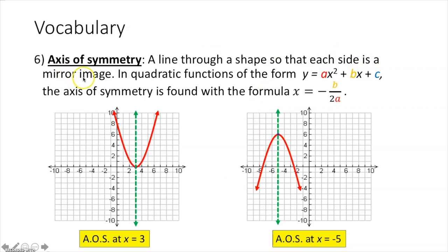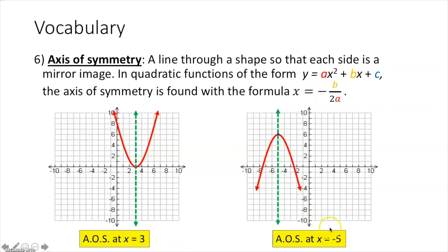The axis of symmetry is a line through a shape so that each side is a mirror image. In quadratic functions of the form y equals ax squared plus bx plus c, the axis of symmetry is found using the formula x equals negative b over 2a — a vertical line. The axis of symmetry is located at x equals whatever the x value of your vertex is.